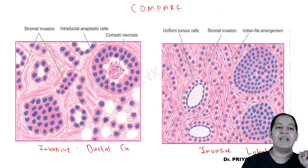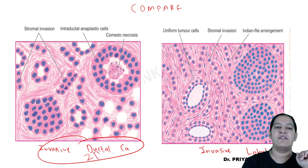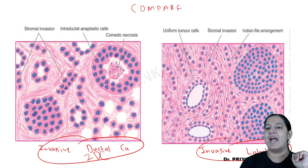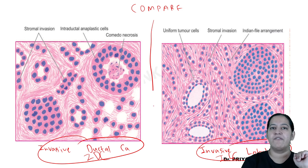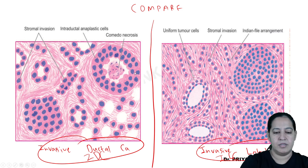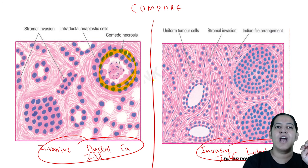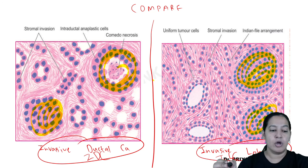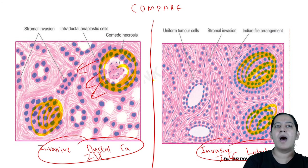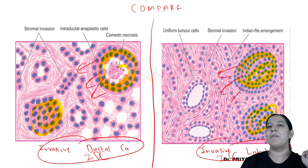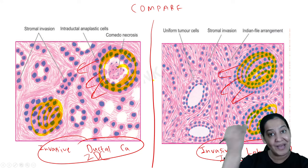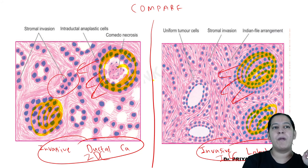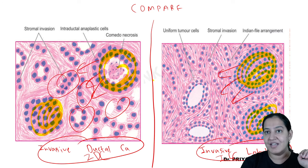Now compare the two — IDC and ILC. In IDC you can see DCIS comedo type and solid type; in ILC there is only one type of LCIS, that is solid. Cells from DCIS come out into the stroma in IDC — no particular pattern, present in clusters and individually. In ILC, cells from LCIS come out into the stroma with a particular pattern known as Indian file pattern.